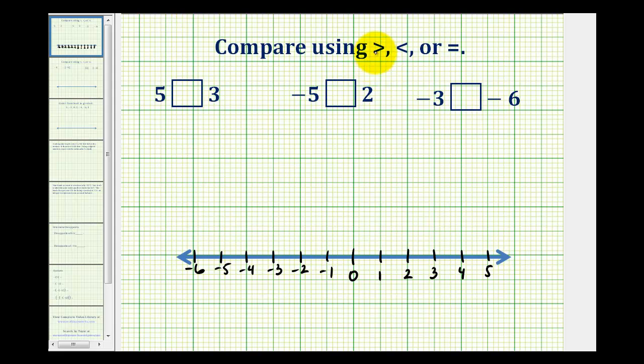We want to compare the integers using the greater than, less than, or equal symbol. To do this, we'll plot the values on the number line, and notice that the larger numbers are always on the right, and the smaller numbers are always on the left.